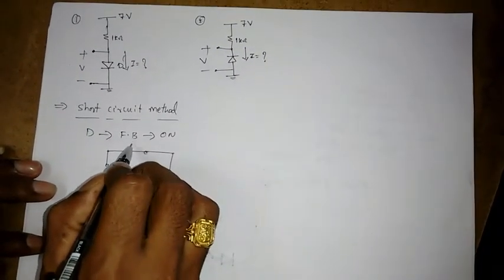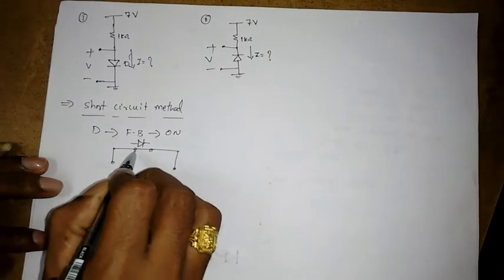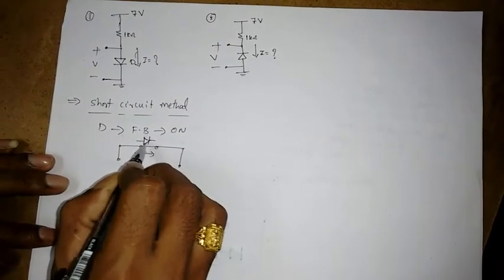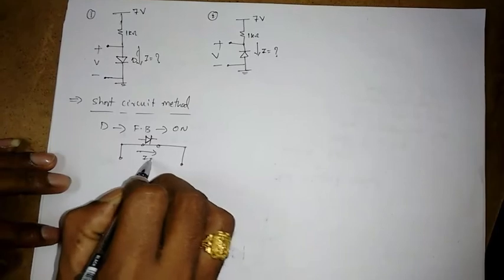the diode will be short circuit. So equivalent is replaced by short circuit. And the current should flow, diode is like this. So it will become short circuit. The current should flow from this anode to cathode. So I should flow like this.